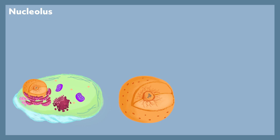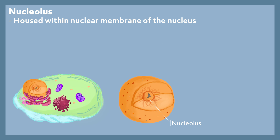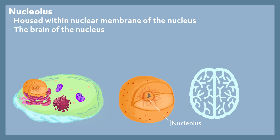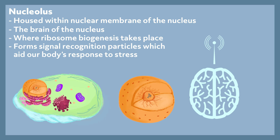Nucleolus. The nucleolus is housed within the nuclear membrane of the nucleus. I said the nucleus is like the brain of the cell — well, the nucleolus is like the brain of the nucleus. The nucleolus is where ribosome biogenesis takes place, meaning the making of ribosomes. The nucleolus also helps in forming signal recognition particles, which aid our body's response to stress.